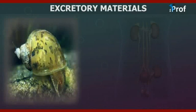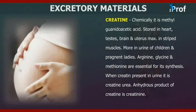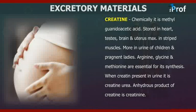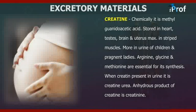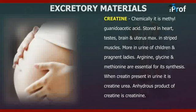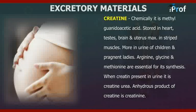Another excretory material is creatine. Chemically, it is methylguanidoacetic acid, stored in the heart, testes, brain, and uterus, and is maximum in striped muscle fibers. It is more concentrated in the urine of children and pregnant ladies. Arginine, glycine, and methionine are essential for its synthesis. When creatine is present in urine, it is called creatinuria. The hydrous product of creatine is creatinine.